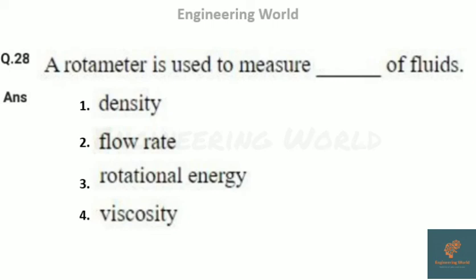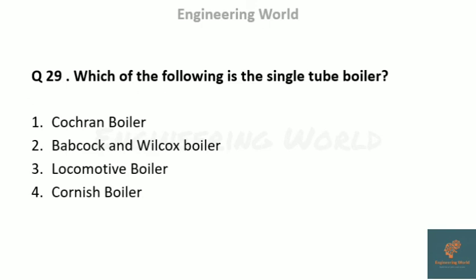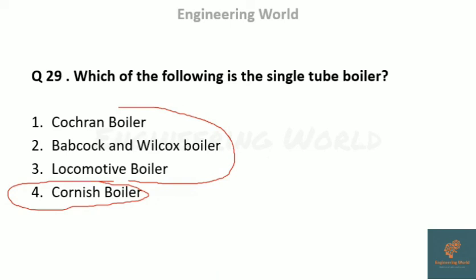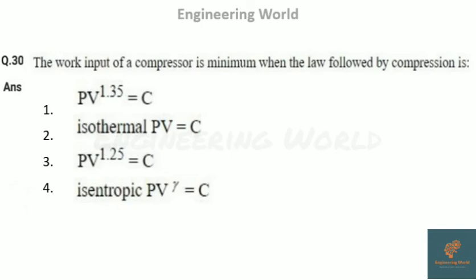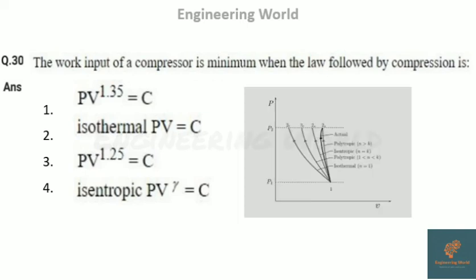A rotameter is used to measure the flow rate of a fluid. We are covering 30 questions in this video; the next 30 will follow, covering all 100 questions. Of the following, options one, two, and three are multi-tube boilers, while the Cornish boiler is a single-tube boiler. For minimum work input in a compressor, the area under the PV curve for isothermal compression (PV = constant) is smallest compared to other processes. Therefore, the answer is isothermal compression.